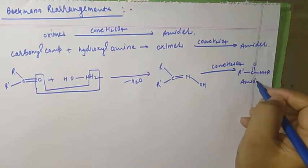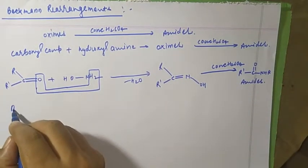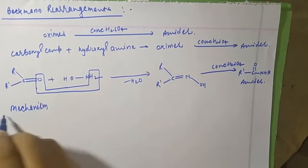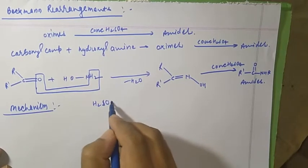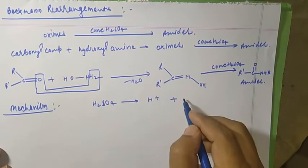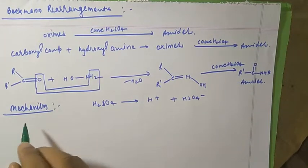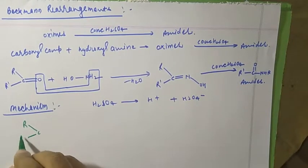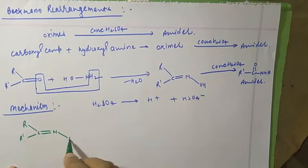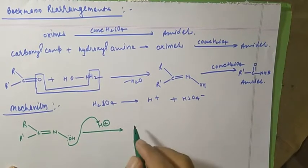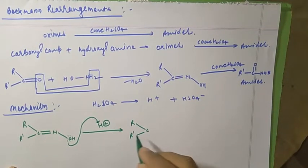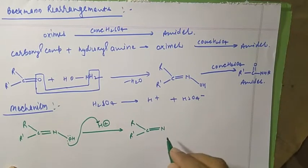Now let's see the mechanism, which is quite important. First, concentrated H2SO4 ionizes — it is strong, so it gives H+ and HSO4- in an irreversible process. Then I take the oxime: R-C(R')=N-OH, and H+ attacks the lone pair on the oxygen, giving R-C(R')=N-OH2+, where a positive charge develops.